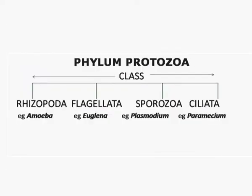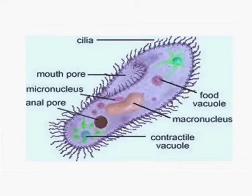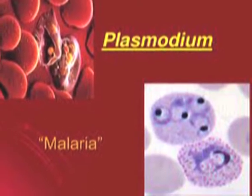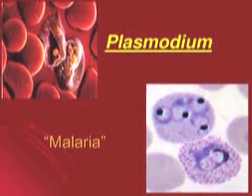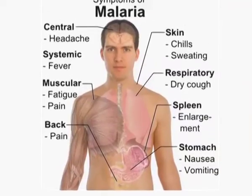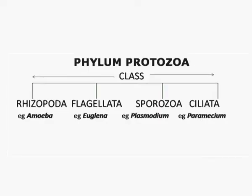Phylum Protozoa also includes class Ciliata, which as the name suggests moves about with the help of cilia — for example, Paramecium. One well-known example is Plasmodium. Since Plasmodium lives in the body of the host and does not move about, it is grouped under class Sporozoa.